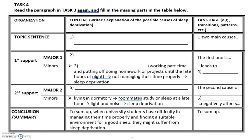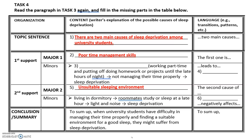Now let's analyze the paragraph further and fill in the missing parts in the outline. This table in Task 4 shows how the paragraph on sleep deprivation is organized — with the topic sentence, supporting ideas, and conclusion — while paying attention to the language used. The topic sentence is the first sentence of the paragraph and focuses on the two main causes: poor time management skills and unsuitable sleeping environment. Each major idea is supported by minor ideas, and a variety of language used to give causes can be seen here.